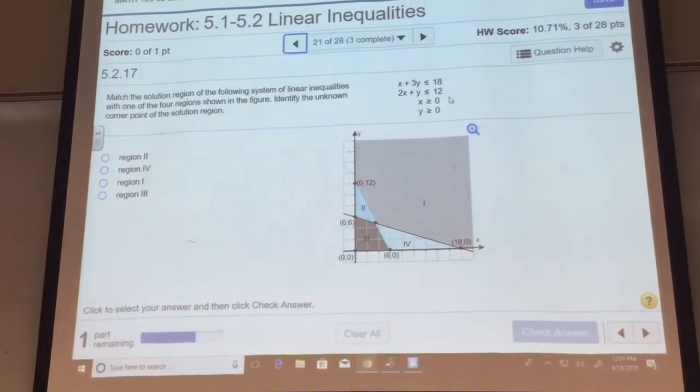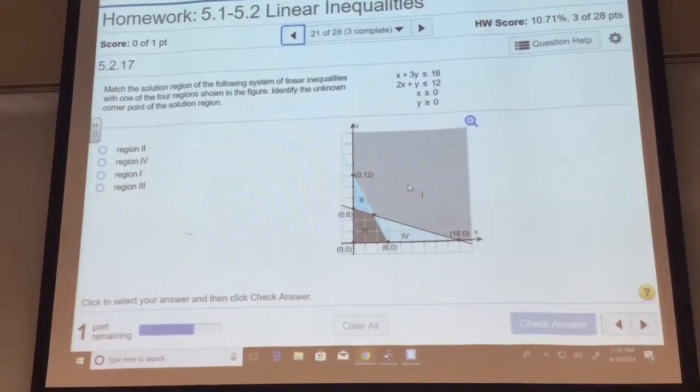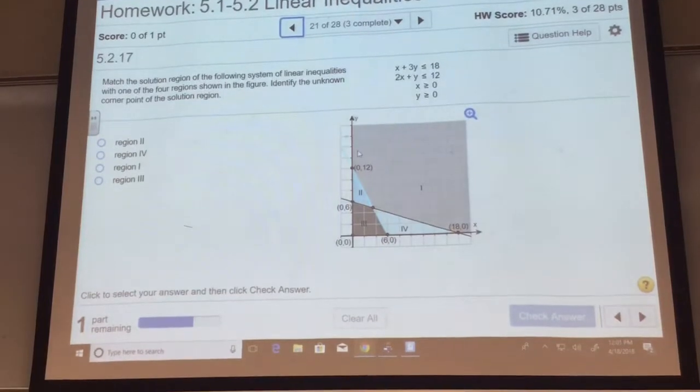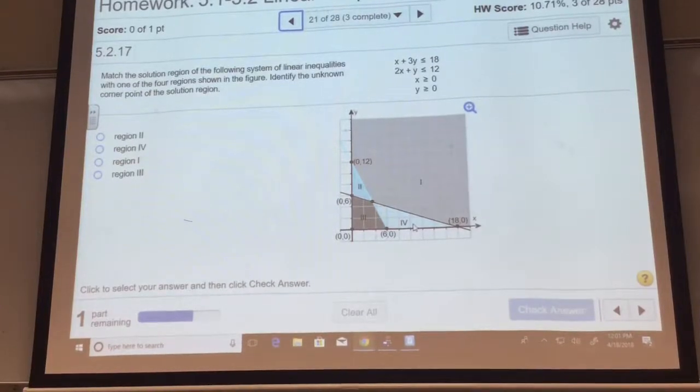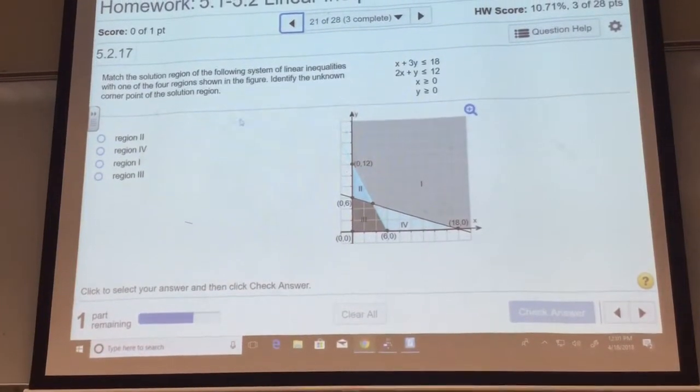Representations where they've already graphed the system. Look what they've done for you. They've already given you the regions, haven't they? See region 1, see region 2, 3, and 4? They're asking you which one of these regions is the feasible region.